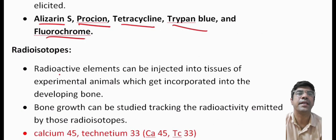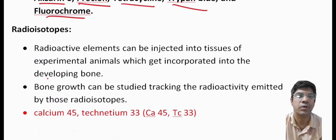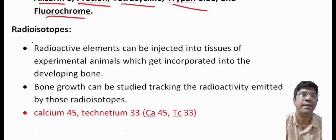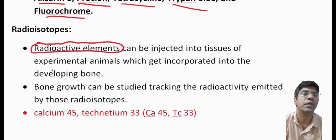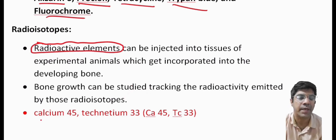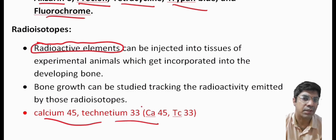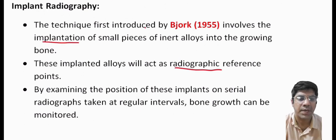Various dyes used in vital staining include alizarin, tetracycline, and trypan blue. Another experimental method is the use of radioisotopes — radioactive elements are injected into the tissue of experimental animals and get incorporated into the bone; bone growth can then be studied through the radioactivity emitted by these radioisotopes. Various radioisotopes that can be used include technetium, calcium, etc.